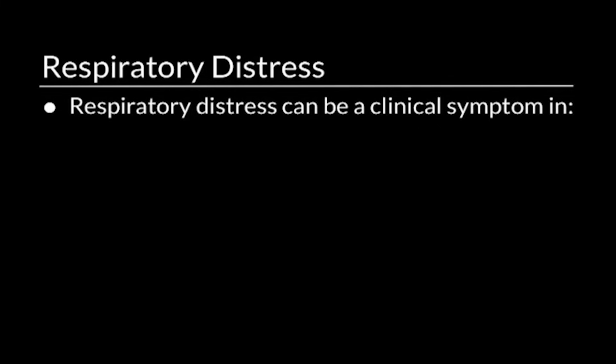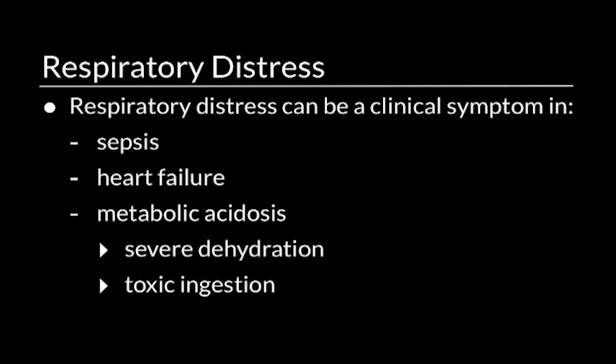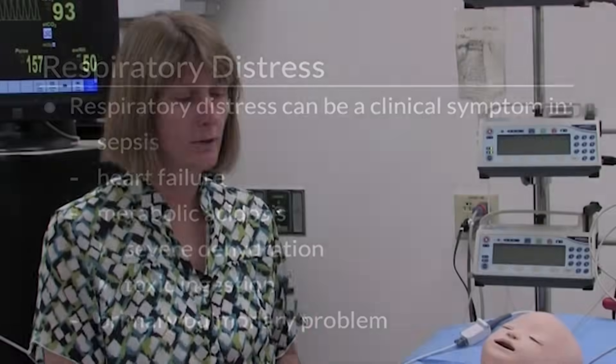We're going to be talking about recognition of respiratory distress and failure in an infant or child. Respiratory distress is one of the most common presenting signs of illness in a pediatric patient. It can represent a problem that doesn't necessarily primarily involve the lungs — a systemic problem like sepsis or heart failure, or a compensation for a metabolic acidosis as may occur in severe dehydration or toxic ingestion. But most of the time respiratory distress can be traced back to some primary problem with the pulmonary system, and different types of problems can present with different characteristic signs and symptoms. We're going to review those and use this mannequin as well as some video to demonstrate the different types of lung disease that can produce different appearances of a child in respiratory distress.